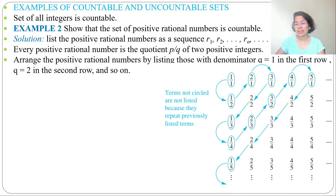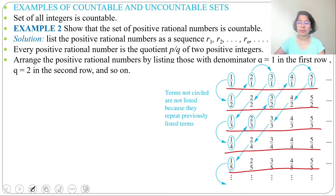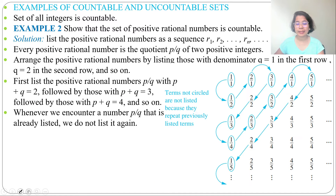In this arrangement, all entries with denominator 1 are in the first row, denominator 2 in the second row, denominator 3 in the third, and so on. We count diagonally: first count entries where P + Q = 2, then P + Q = 3, then P + Q = 4, and so on. Whenever we encounter a number P/Q that is already listed, we do not list it again.